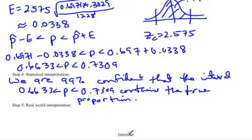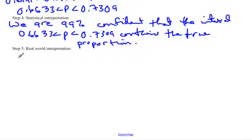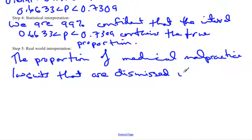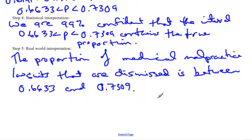The real-world interpretation is where you're just telling people what you found. So we actually just found that the proportion of medical malpractice lawsuits that are dismissed is between 0.6633 and 0.7309. So this is actually what you found of how many are actually dismissed. This is actually the answer to the question at the beginning and it lets everybody know what you found.